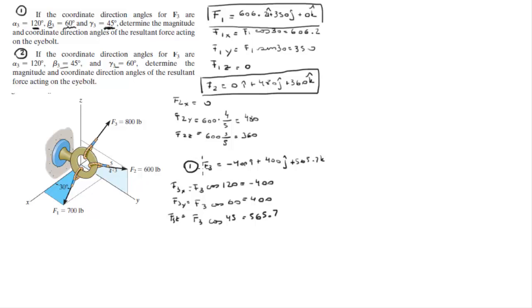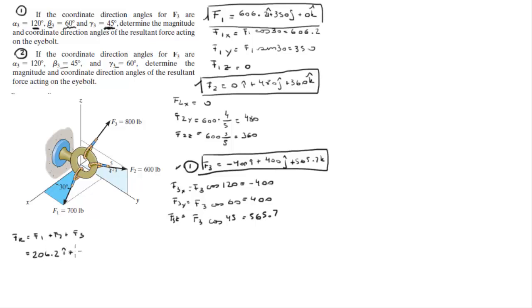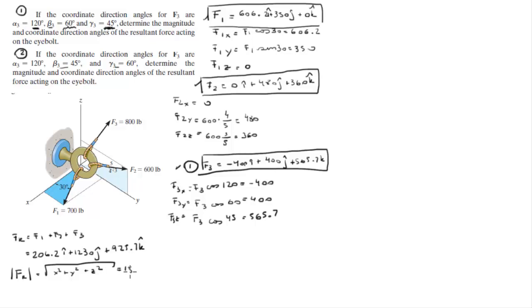When you add FR = F1 + F2 + F3, adding these three vectors together you get FR equal to 206.2i + 1230j + 925.7k. Then you can find the magnitude of FR by taking the square root of the sum of the squared components, which comes out to be 1553.2.